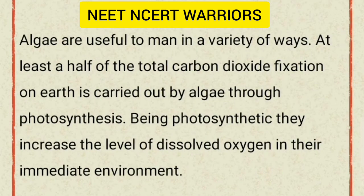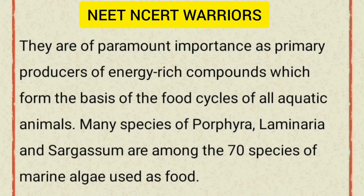Algae are useful to man in a variety of ways. At least half of the total carbon dioxide fixation on earth is carried out by algae through photosynthesis. Being photosynthetic, they increase the level of dissolved oxygen in their immediate environment. They are of paramount importance as primary producers of energy-rich compounds, forming the basis of food cycles of all aquatic animals. Many species of Porphyra, Laminaria and Sargassum are among the 70 species of marine algae used as food.